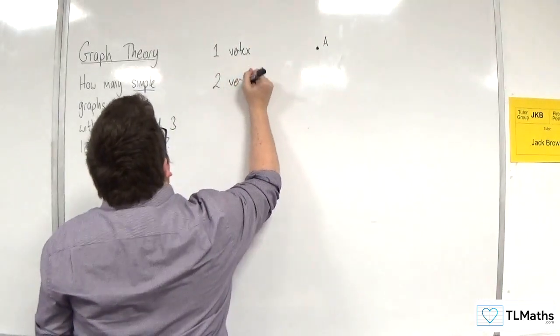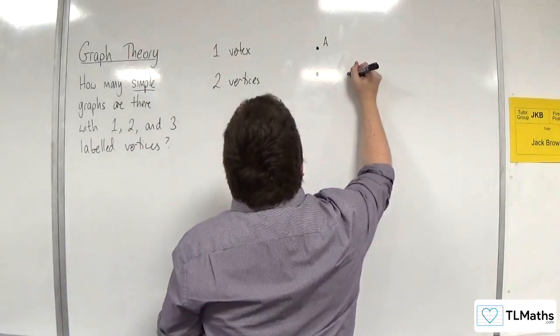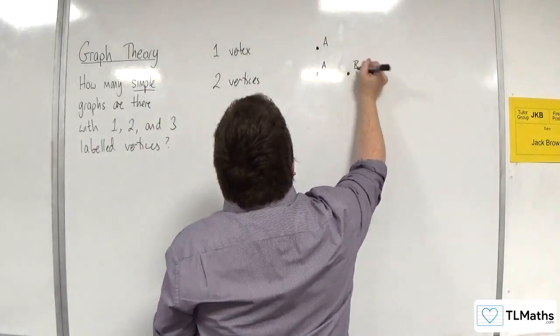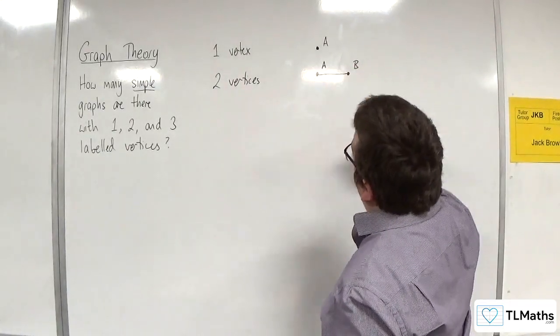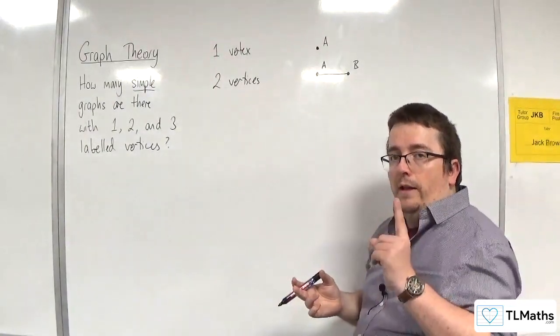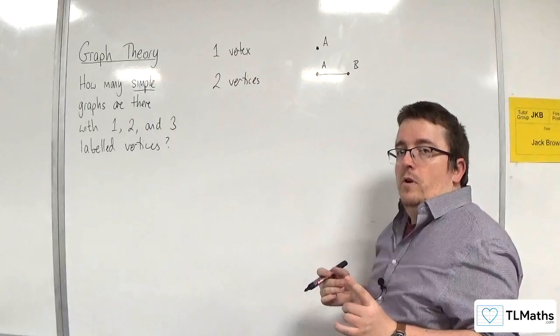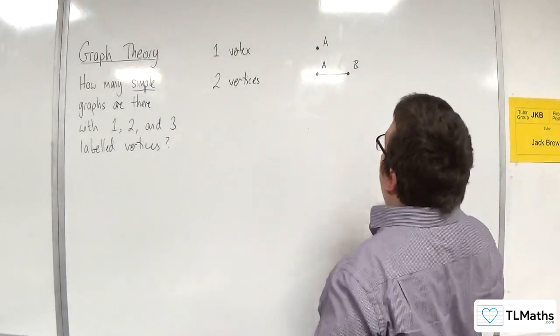So, two vertices. Let's have A and B. So there we are. A and B are connected. So that's one way. But simple graphs don't have to be connected. They can also be disconnected.